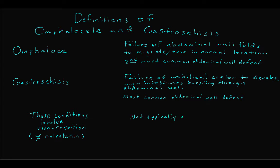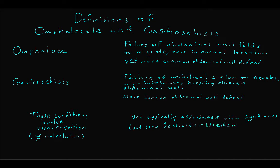Congenital abdominal wall defects do not usually present as part of familial and genetic syndromes, although some genetic syndromes — especially Beckwith-Wiedemann syndrome — are associated with omphalocele.